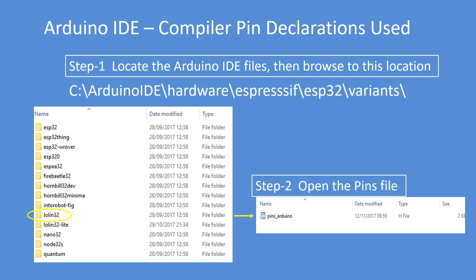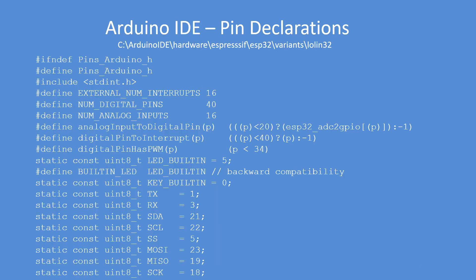Then browse down to this location: hardware → espressif → ESP32 → variants. Within variants are all the boards listed in your IDE when you go to select board - there are about 10 to 12 different variants. The one I'm concentrating on today is Lolin32. Open that folder and open pins_arduino.h.